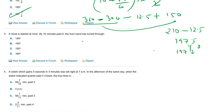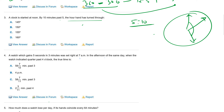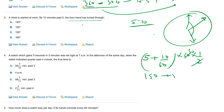Third question: a clock is started at noon. By ten minutes past five, the hour hand has turned through how many degrees? Ten minutes past five means five hours and ten minutes. Starting at twelve o'clock, five hours plus ten by sixty hours — one half degree per minute gives 150 plus 5 equals 155 degrees. C is the answer.